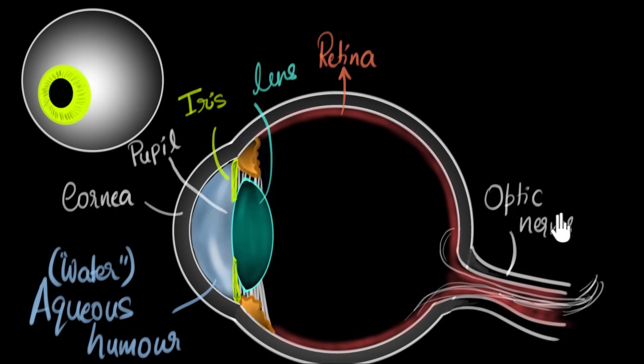And then our brain, the command center, receives these electrical signals, does a lot of complex processing. And it's eventually able to figure out where those light rays came from and then it constructs the image of the world around us. The whole thing is super complicated. Our brain is super complicated, but it's also pretty amazing how it's able to do all of this.